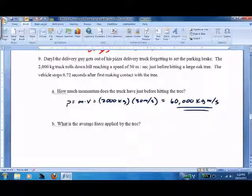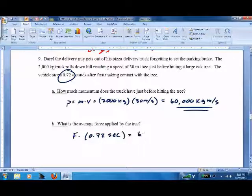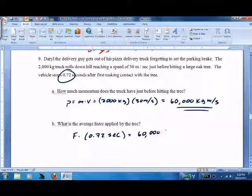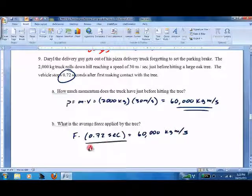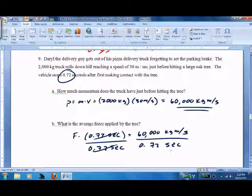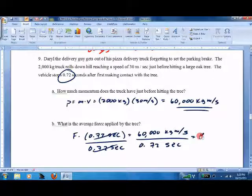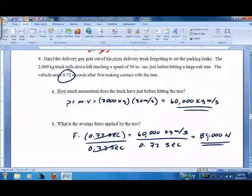Now it hits the tree and contacts it for 0.72 seconds, so force times 0.72 seconds equals 60,000 kg meters per second. Divide both by 0.72, and we get 83,000 newtons, which is a lot.